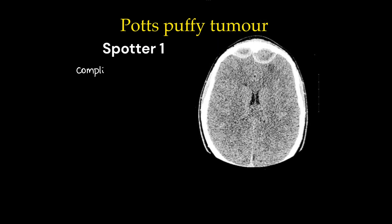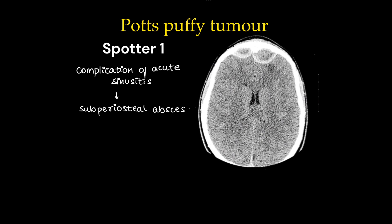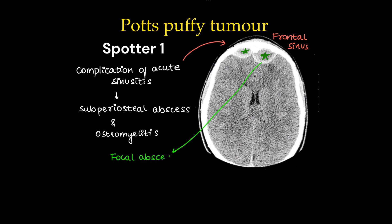Spotter 1: Pott's Puffy Tumor. It's a complication of acute sinusitis, usually presenting as subperiosteal abscess and osteomyelitis, commonly occurring in the frontal bone. In this case it is frontal bone osteomyelitis. It can also present as subcutaneous edema. Here we can see the focal abscess — it can be with or without swelling over the overlying scalp.